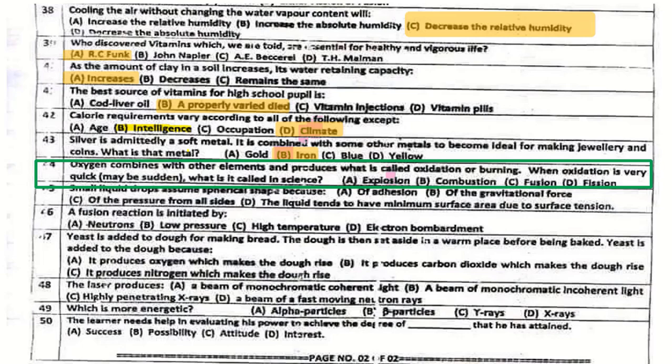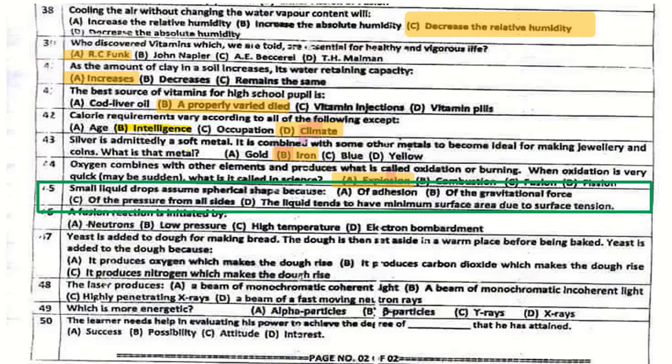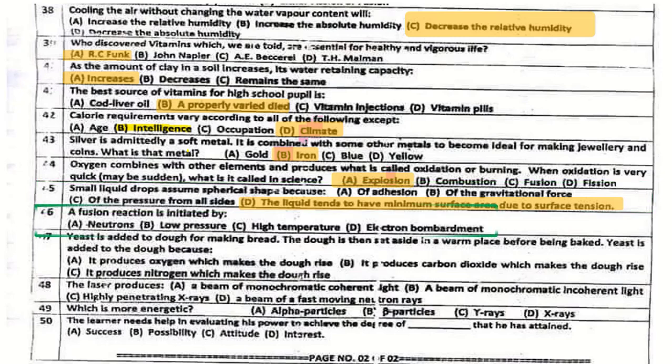Question number 44: Oxygen combines with other elements and produces what is called oxidation or burning. Oxidation that is very quick, or sudden, is called in science an explosion. Question number 45: Small liquid drops take a spherical shape because the liquid tends to have minimum surface area due to surface tension.